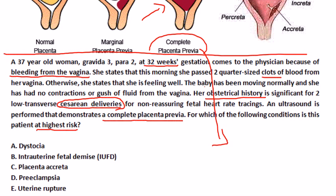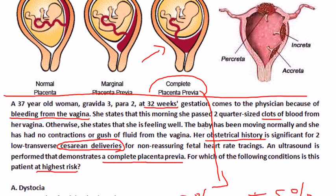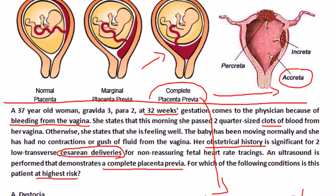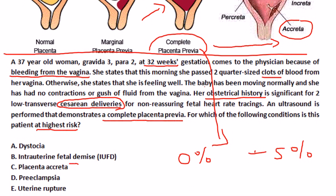The most important part of this vignette is that she has had two prior cesareans — and remember, cesareans are a risk factor. Now, if a woman has placenta previa and no prior cesareans, she has about a 5% risk of developing placenta accreta. Placenta accreta — when the placenta is attached to the myometrium — is a complication of placenta previa, and that is the answer: choice C.